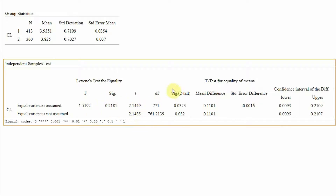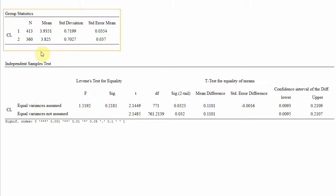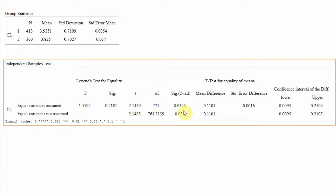Here is Levene's test of equality of variance. You have two significance values in the output. To decide which one to use, check Levene's test — if its significance value is greater than 0.05, it is insignificant, which means equal variance is assumed between the two groups, and you select the first p-value. If it were less than 0.05, equal variance would not be assumed and you would select the lower value.